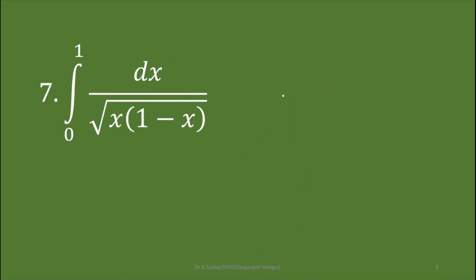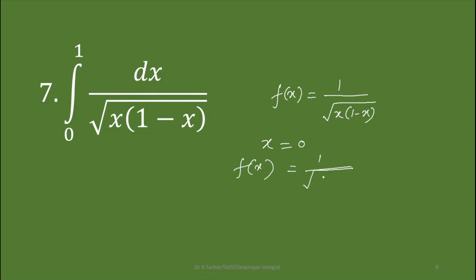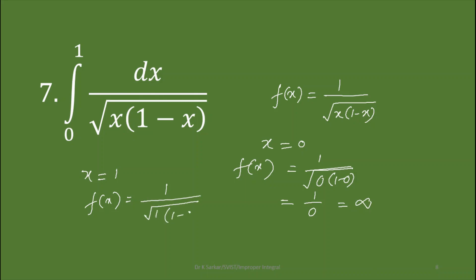In question number seven, the integrand is f(x) equals 1 by square root of x times (1 minus x). If we take the lower limit x equals 0, then f(x) becomes 1 by square root of 0 times 1, which is 1 by 0 — infinite. Again if we take x equals 1, then f(x) equals 1 by square root of 1 times (1 minus 1), which is also infinite. So at both the limits the integral is infinite, and therefore it is also an improper integral.